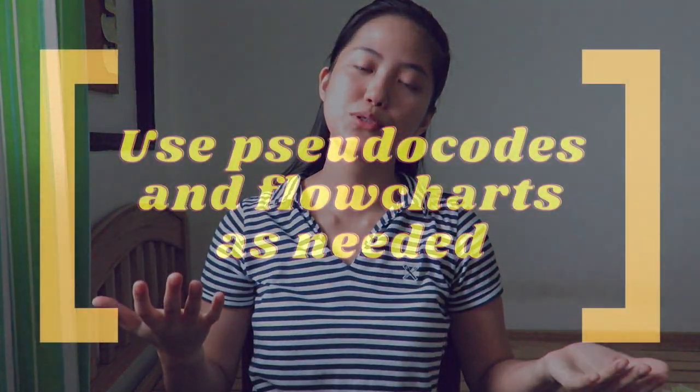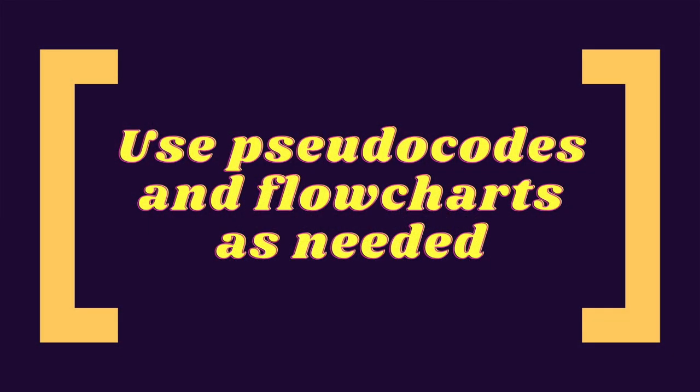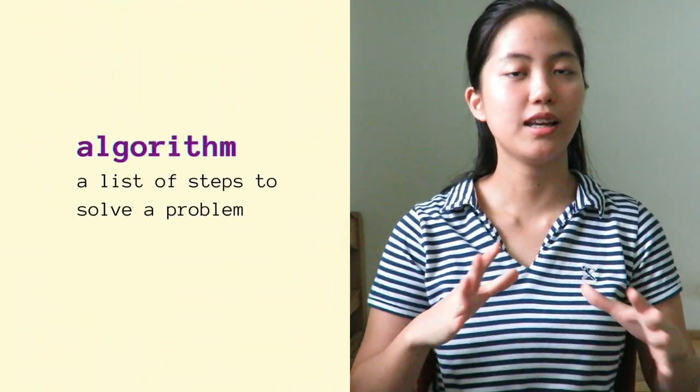For my second tip: use pseudocodes and flowcharts as needed. When I entered college, I was really excited to code. However, it was not the first lesson that our teacher taught us — it's pseudocodes and flowcharts. So I'll be explaining what pseudocodes, flowcharts, and also algorithms are. An algorithm is basically a list of steps to solve a problem — like a recipe, a list of steps to cook a dish.